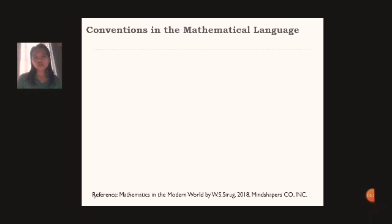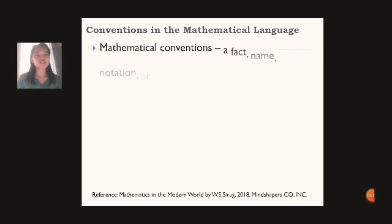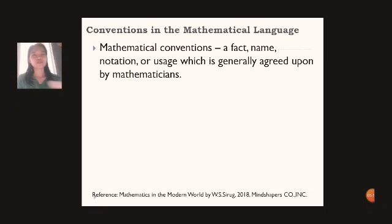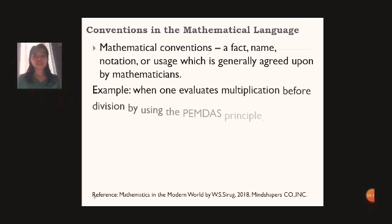So you can see now the difference between expressions and sentences. Let's move on to conventions in the mathematical language. Mathematical language have conventions. And these conventions will help individuals like us to distinguish between the different types of mathematical expressions. So mathematical convention is a fact, name, notation, which is generally agreed upon by mathematicians.